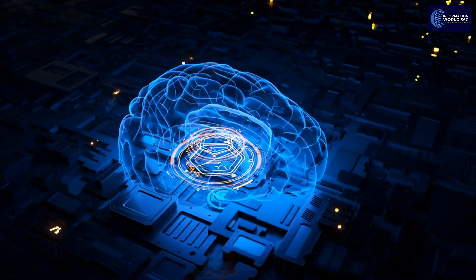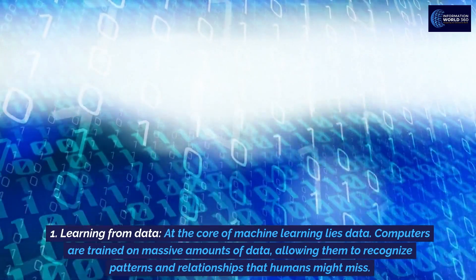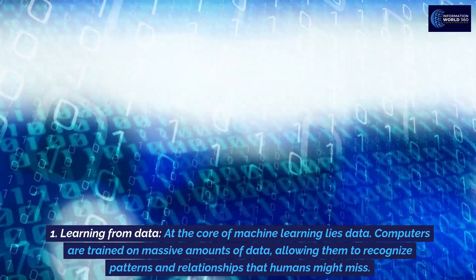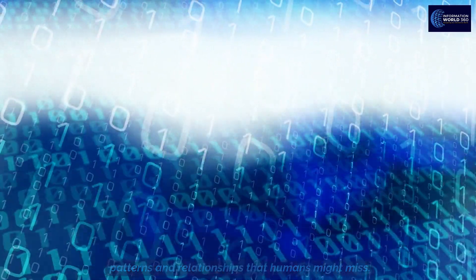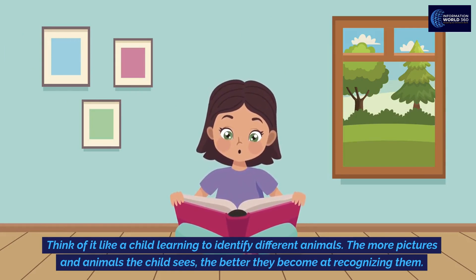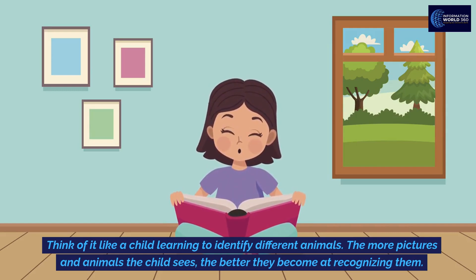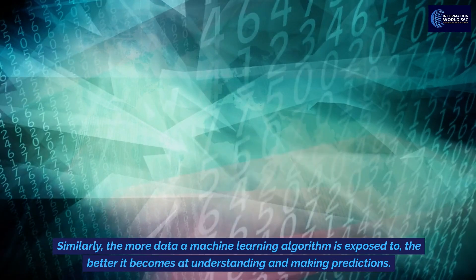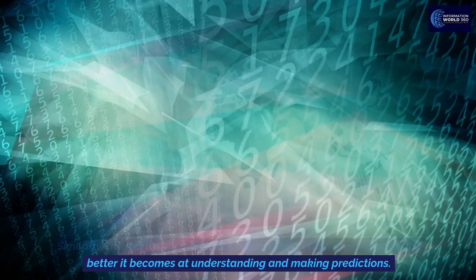At the core of machine learning lies data. Computers are trained on massive amounts of data, allowing them to recognize patterns and relationships that humans might miss. Think of it like a child learning to identify different animals — the more pictures of animals the child sees, the better they become at recognizing them.